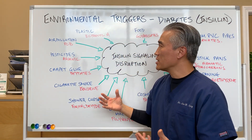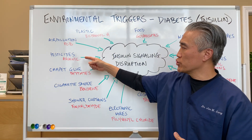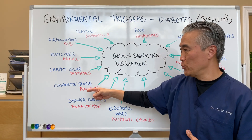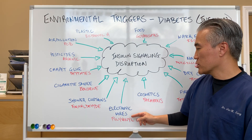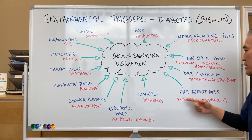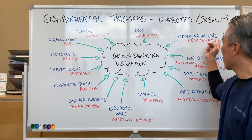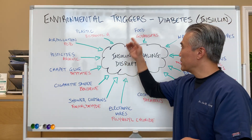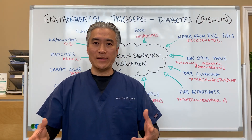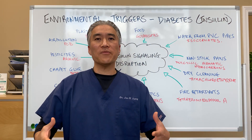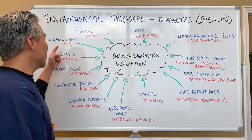There are many different types of things: plastics, air pollution, pesticides, carpet glue, cigarette smoke, shower curtains, electronic wires, cosmetics, fire retardants, dry cleaning, non-stick pans, water from PVC pipes, and foods. All of these items are filled with chemicals.